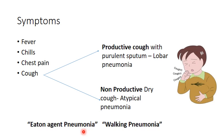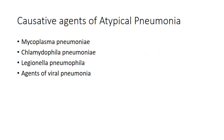Mycoplasma pneumoniae was first isolated by Monroe Eaton. Here is the list of causative agents of atypical pneumonia: Mycoplasma pneumoniae, Chlamydophila pneumoniae, Legionella pneumophila, and other agents of viral pneumonia.